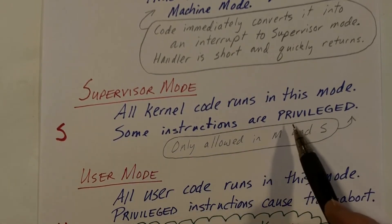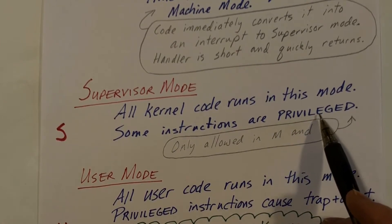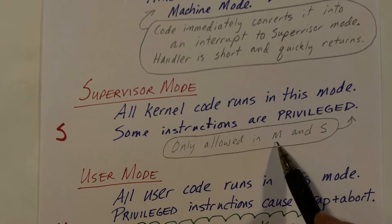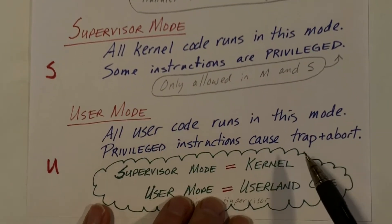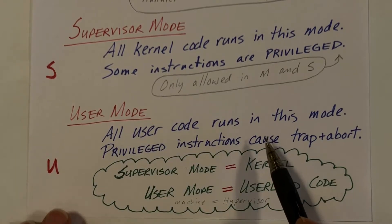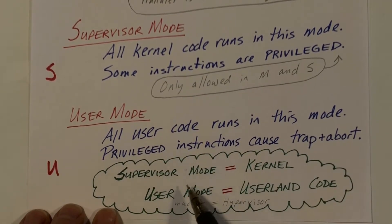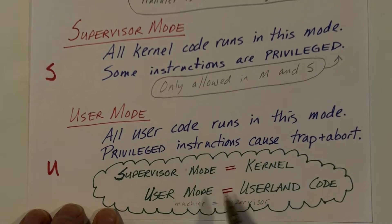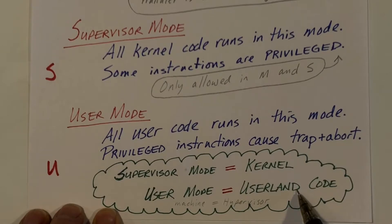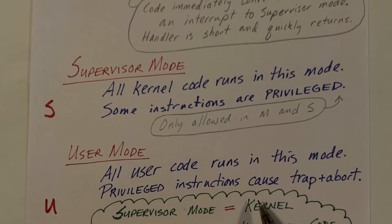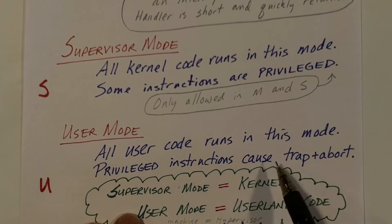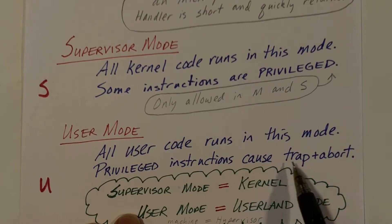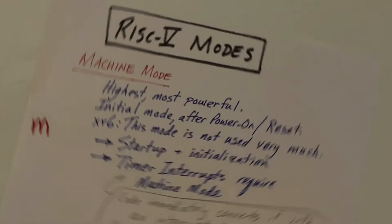Supervisor mode is where all the action happens — all the kernel code runs in this mode. Some instructions are privileged and cannot be executed in user mode; privileged instructions can only be executed in machine and supervisor mode. All user code runs in user mode. If code runs in supervisor mode, it is kernel code, and vice versa. If a user program tries to execute a privileged instruction, it will cause a trap and the kernel will abort that process.